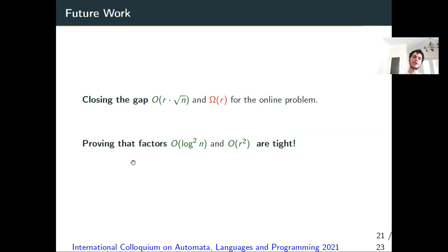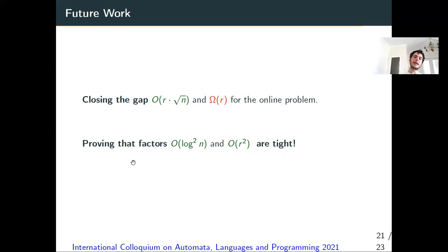Some interesting future research directions include closing the gap between the upper bound O(R² log N) and the lower bound Ω(R) for the competitive ratio of the online version, and obtaining tighter lower and upper bounds for the offline version. We conjecture that the O(log² N) and O(R²) factors are tight in the respective senses. Currently our lower bounds are only Ω(log N) and Ω(R) for R-bounded sequences. We conjecture that more careful reductions can prove these factors to be tight. Thank you.